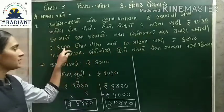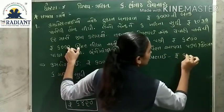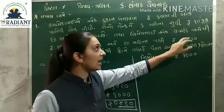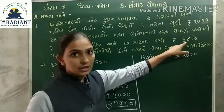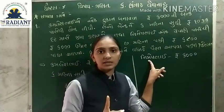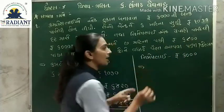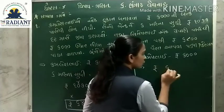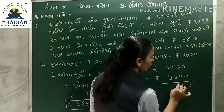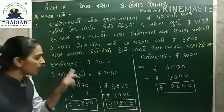નિમેશ ભાઈ એ એક વેપારી પાસેથી 6,000 રૂ. ની લોન લીધી છે. 6 મહિના પછી તેઓ 6,800 રૂ. ચૂકવે છે. 6,800 - 6,000 = 800 રૂ. વ્યાજ.